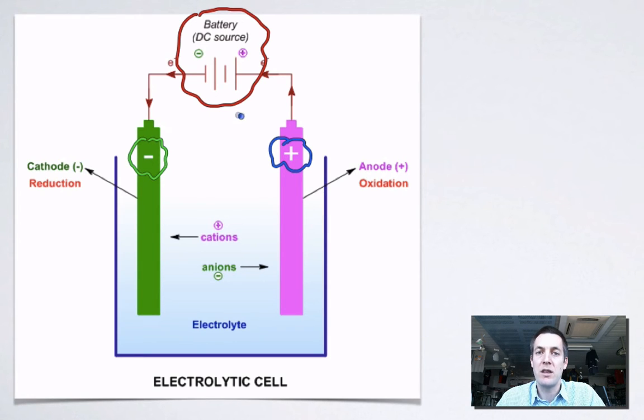Except I suppose that another way of looking at it is that they haven't switched at all because reduction is still happening at the cathode and oxidation is still happening at the anode. Now let's have a look at why those things will happen.